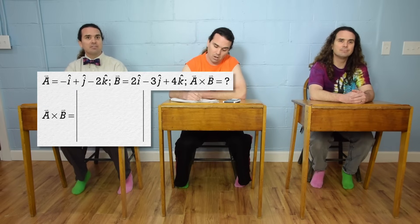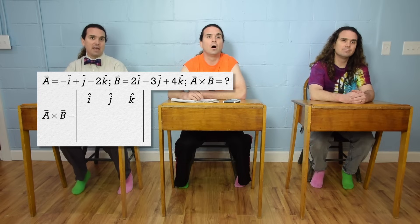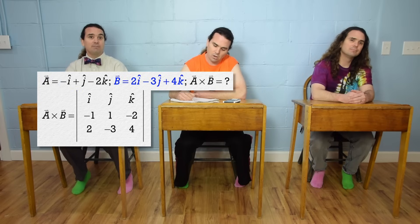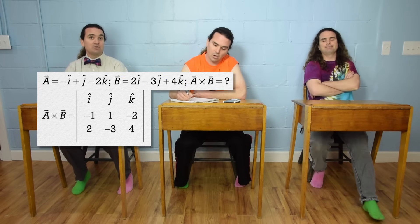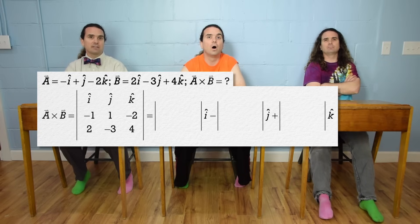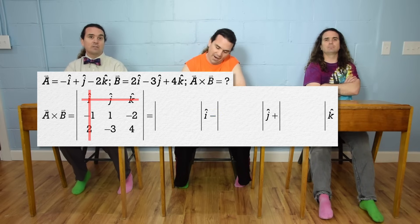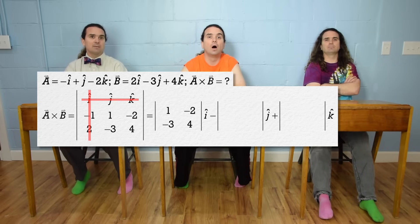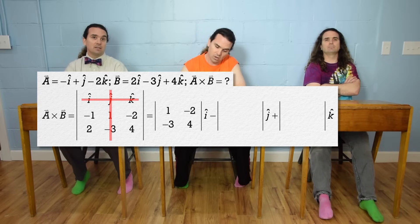So the cross product is the determinant of the matrix where the first row is i, j, k. The second row is the components of A: negative 1, 1, negative 2. And the third row is the components of B: 2, negative 3, 4. That is equal to the sum of the 2 by 2 determinants for each of the unit vectors, although we subtract the second determinant — the determinant that goes with j. Cross out the row and column which has i in it and you get the determinant 1, negative 2, negative 3, 4 times unit vector i. Cross out the row and column which has j in it and subtract the determinant negative 1, negative 2, 2, 4 times unit vector j.